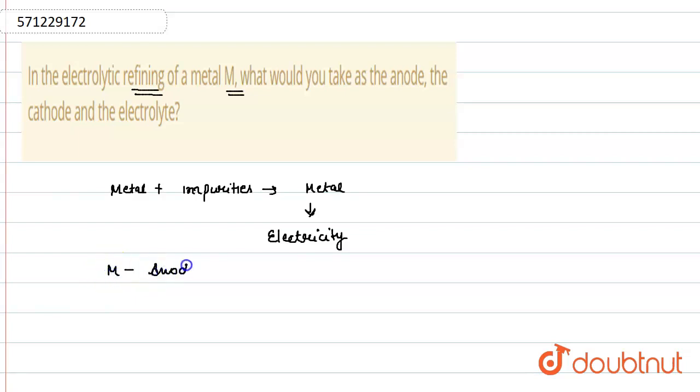we take metal at the anode and a thin strip of pure metal at the cathode. Now when the anode and cathode are connected with a battery—suppose we are taking a cell here—